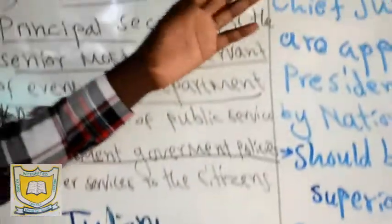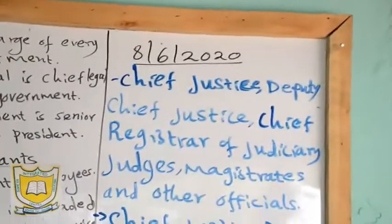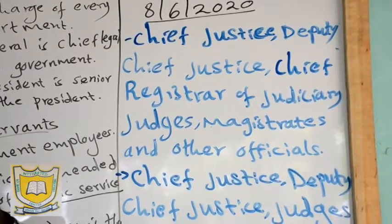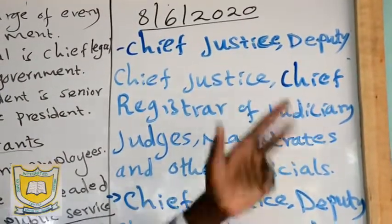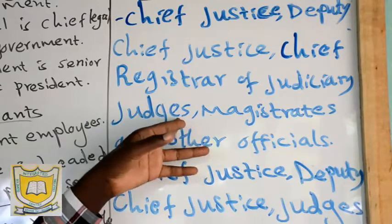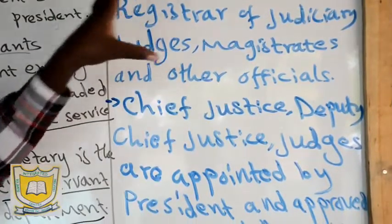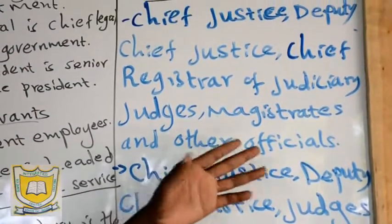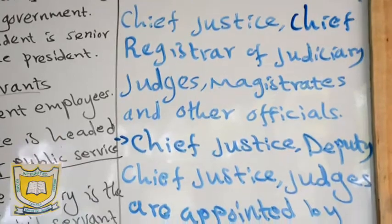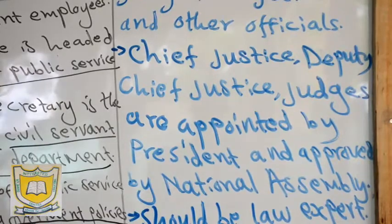The judiciary is made up of the chief justice, who is the president of the judiciary, then the deputy chief justice who is the senior assistant president of the judiciary, then we have the chief registrar of the judiciary, then we have the judges in the superior courts, then the magistrates in the subordinate courts, and other officials like those working in the judicial service commission and so on.